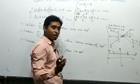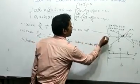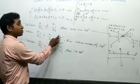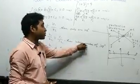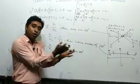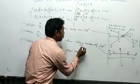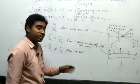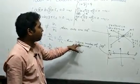So graphically: first condition gives intersecting lines (one solution); second condition where a₁/a₂ = b₁/b₂ = c₁/c₂ gives coincident lines — the lines lie exactly on top of each other — giving infinite solutions.